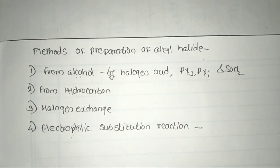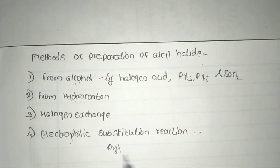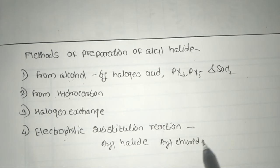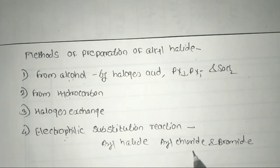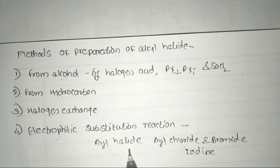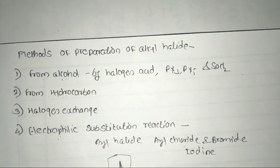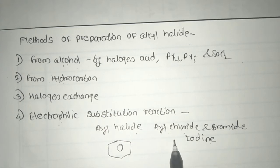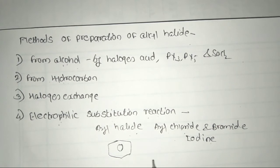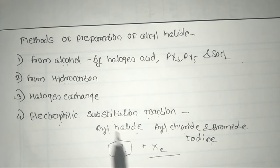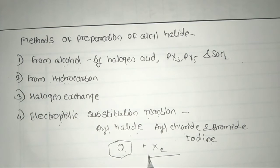Today we start the fourth method for preparation of alkyl halides: electrophilic substitution reaction. This method is used for preparation of aryl halides — aryl chloride, aryl bromide, and aryl iodide — by direct halogenation of benzene and its derivatives. This reaction is carried out in dark conditions in the presence of a suitable Lewis acid.